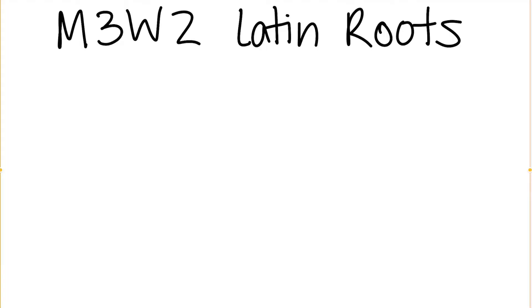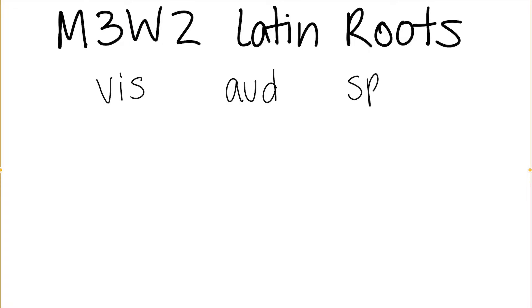Today we are going to be talking about three different types of Latin roots. The first one is vis, the second one is aud, and the third one is spec.